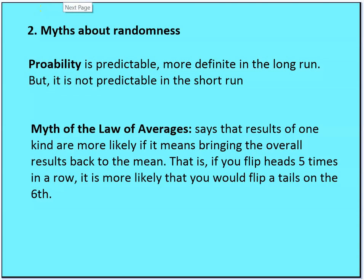Because the sixth trial is independent, even though in aggregate it's more likely you'd flip five heads and one tails across six flips, it does not necessarily mean that any of the five previous flips will influence the sixth. So it's the myth of the law of averages.